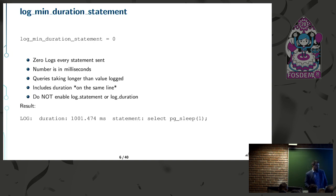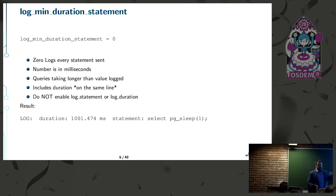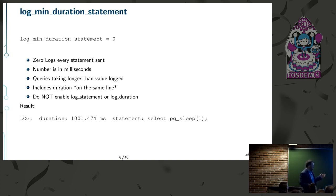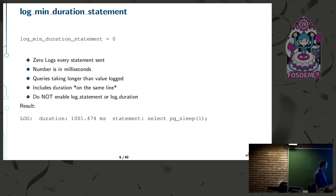Don't enable log_statement or log_duration, because if you enable those, the time ends up on a different line from the actual query, which makes it really obnoxious to figure things out. This is what you'll see from the result — a very simple pg_sleep statement with a duration of about 1,000 milliseconds.